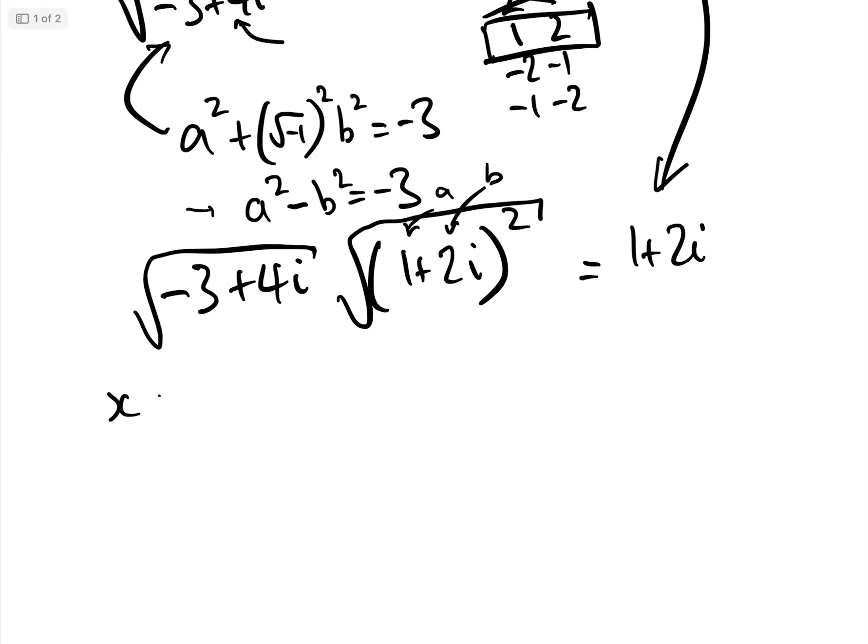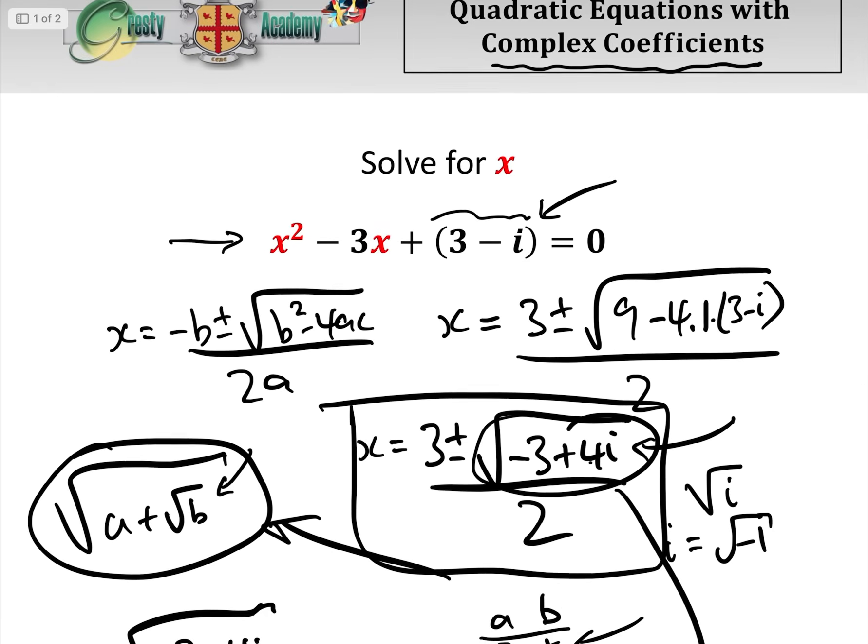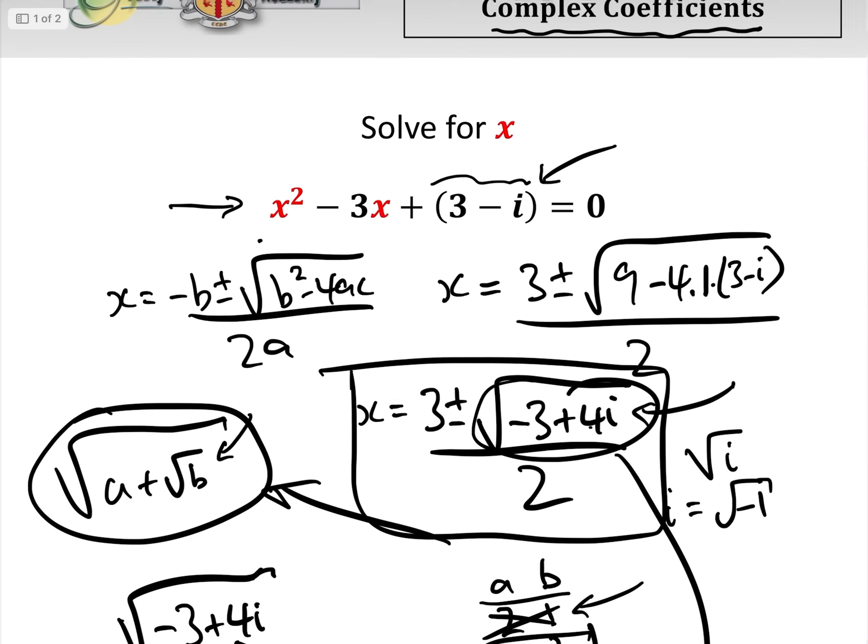And we can rewrite our solution as x equals 3 plus or minus 1 plus 2i over 2. And so therefore, x equals 4 plus 2i over 2 or 2 minus 2i over 2. So therefore, x equals 2 plus i or 1 minus i. And they are the two solutions to our quadratic up here.